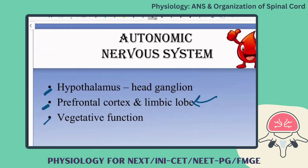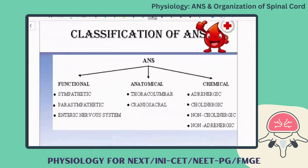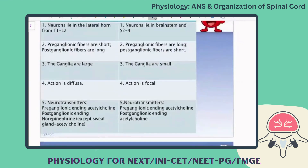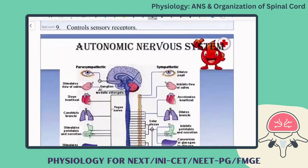Vegetative functions during metabolic reactions and after intake of food also send signals to the autonomic nervous system. The classification: functionally, sympathetic and parasympathetic; anatomically, sympathetic is from thoracolumbar and parasympathetic is from craniosacral. The chemicals involved are mainly adrenergic, cholinergic, or non-cholinergic non-adrenergic.